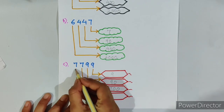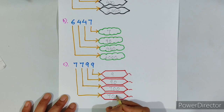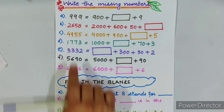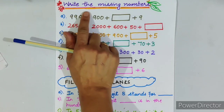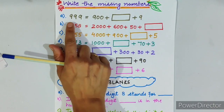Here in this sum, 9 stands for 9, this 9 stands for 90, this 7 stands for 700, and this 7 stands for 7,000. Write the missing numbers.